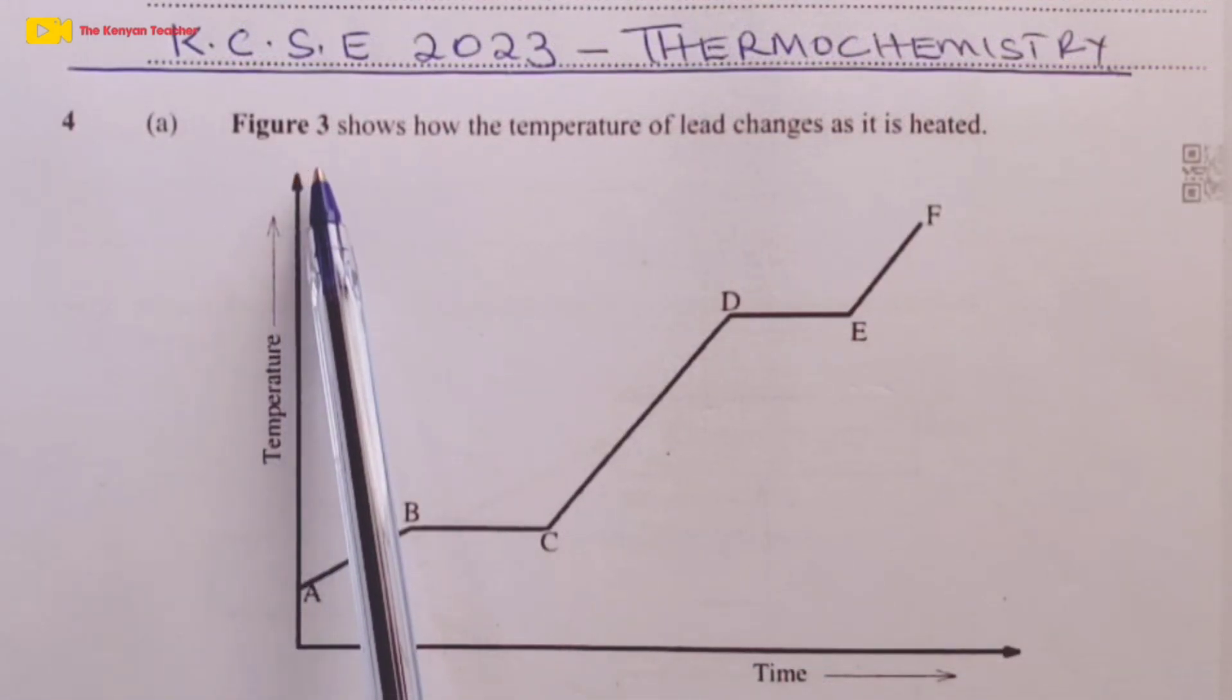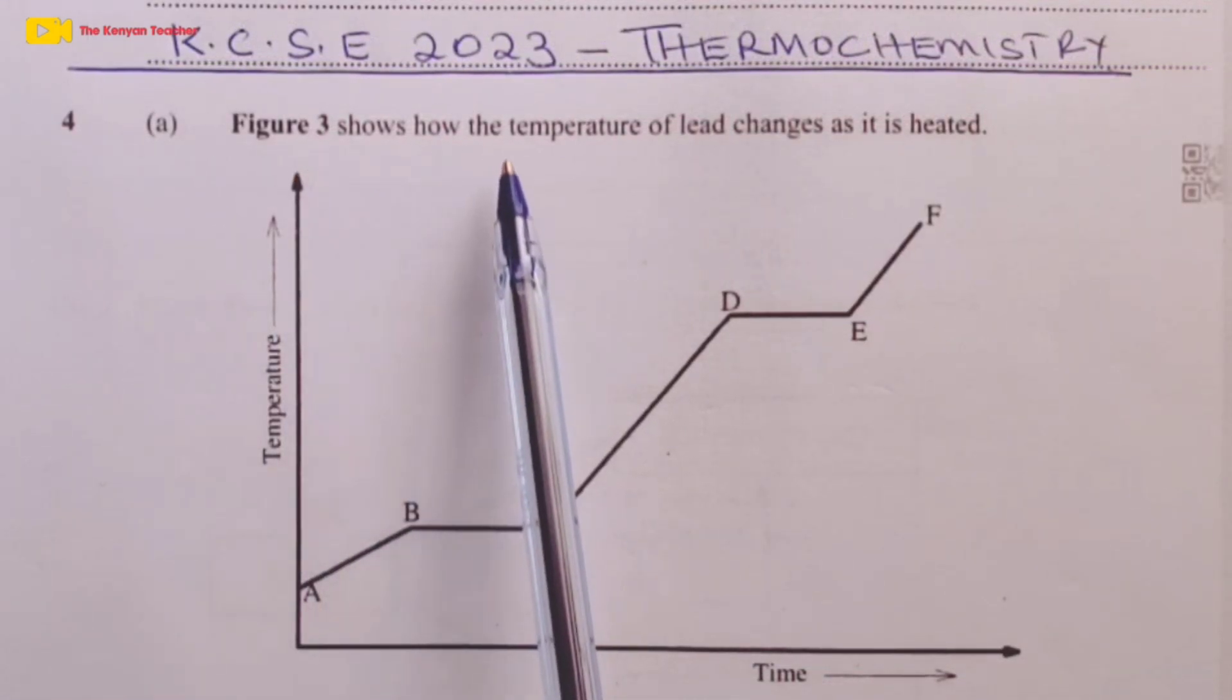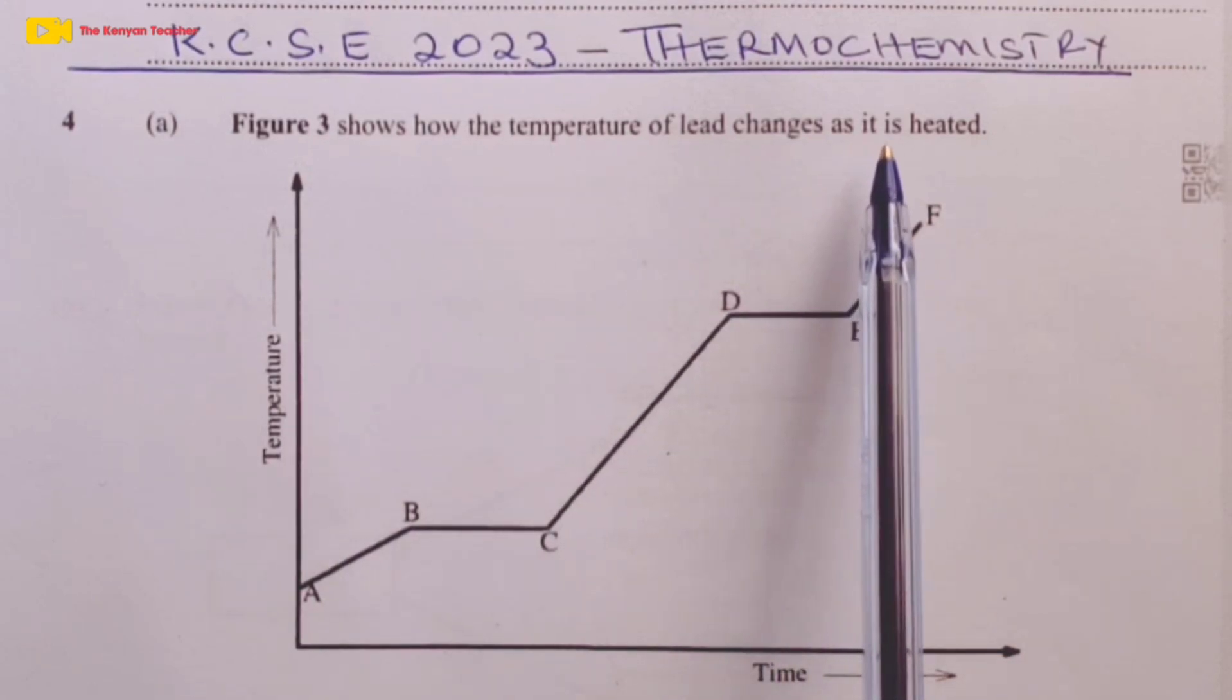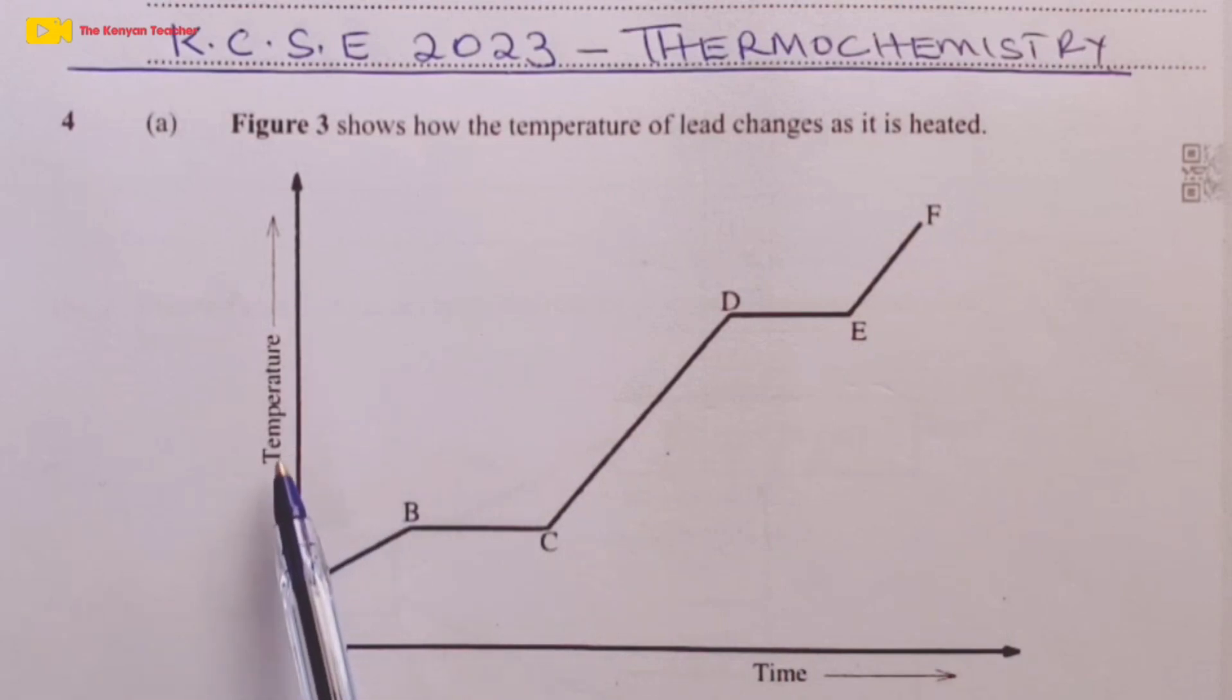Figure 3 shows how the temperature of lead changes as it is heated. We have temperature on the y-axis and time on the x-axis. From Form 1 knowledge, we know that between region A and B, our lead is in solid state. Between region B and C, the solid is melting, so temperature remains constant.